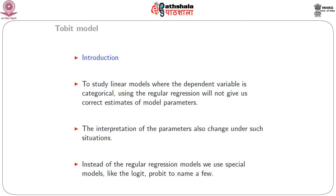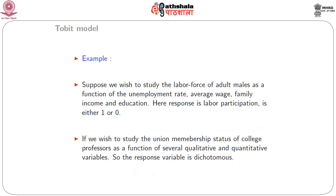Some of the most commonly used models for dichotomous response variables are logit and probit models, which are extensively studied in the statistical community. A lesser known model is the Tobit model, which is useful when we have censored data for the response. For example, if we want to study the labour force participation of adult males as a function of the unemployment rate, average wage, family income, and education.